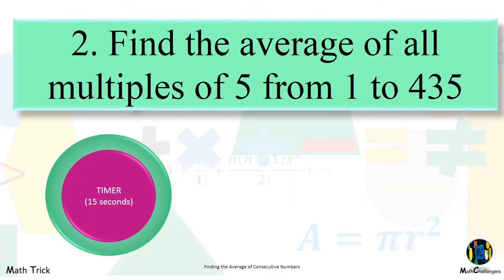2. Find the average of all multiples of 5 from 1 to 435.